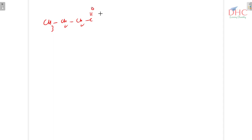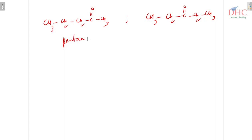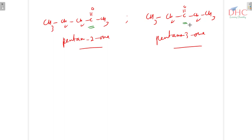Next example: CH₃–CH₂–CH₂–C=O–CH₃ is pentan-2-one, and CH₃–CH₂–C=O–CH₂–CH₃ is pentan-3-one. Both contain the ketone C=O group, which is a polyvalent functional group, and it is the same in both isomers. But they differ in alkyl groups: in pentan-2-one it is propyl on one side and methyl on the other; in pentan-3-one it is ethyl on both sides. Hence they are metamers and the phenomenon is metamerism.